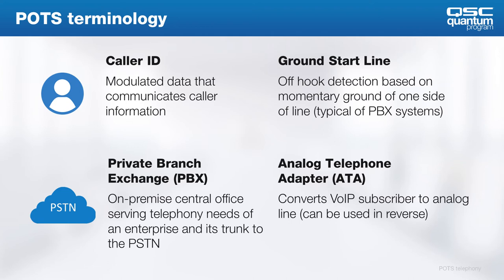A private branch exchange, or PBX, is a localized phone system placed in an office building or structure to handle local extensions. Many of these systems make use of multi-pair cabling or proprietary features, so you should be careful when these come up in integration with Q-SYS POTS. External calls are made through a PBX by way of an analog or digital trunk. Many PBX systems make use of ground start lines rather than loop start lines — meaning one side of the line is temporarily grounded to signal the off condition rather than using current loop. An analog telephone adapter, or ATA, is a piece of hardware that converts a VoIP subscriber line to analog telephony, used when Q-SYS soft phones can't subscribe directly to an on-premise VoIP system.